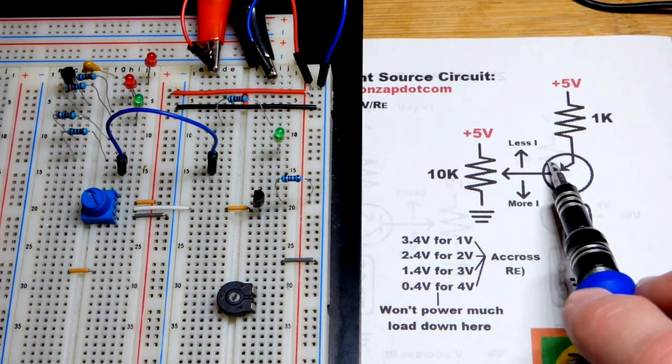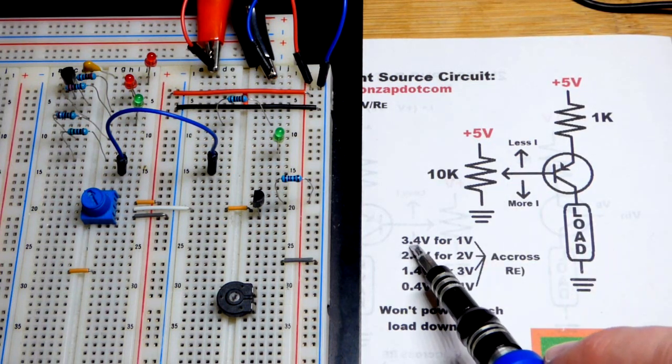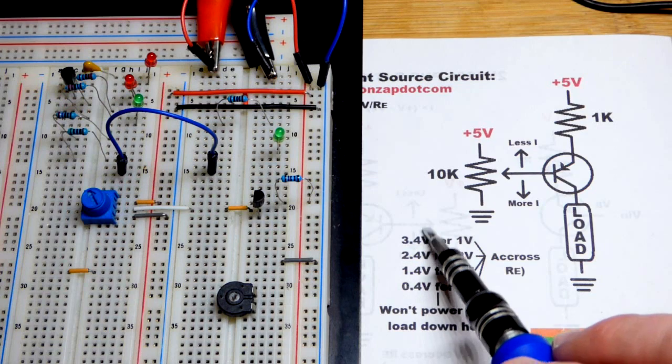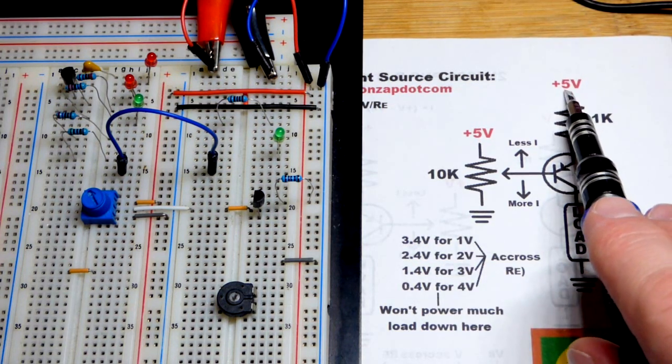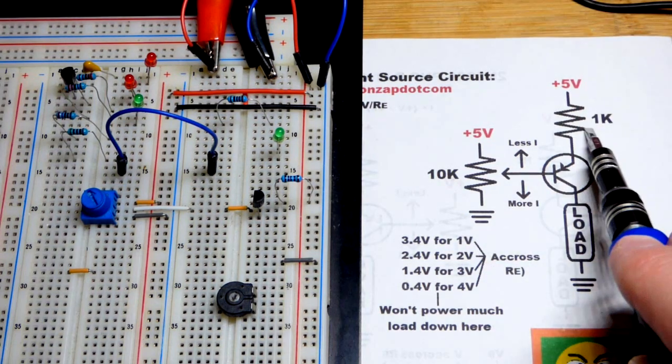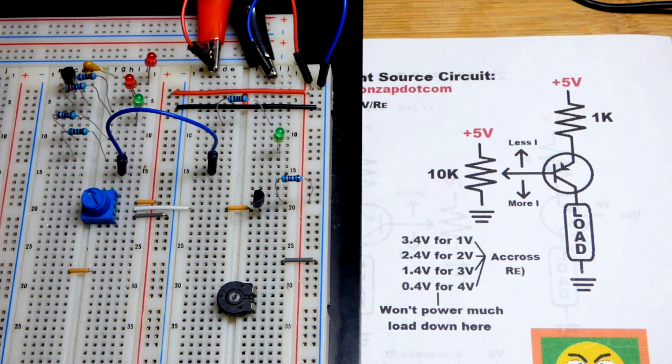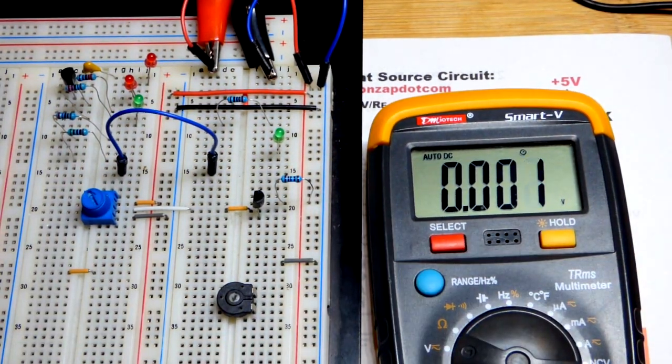But then there's the base to emitter that adds another about 0.6 volts that we have to add to this number. So we want to subtract about 1.6 volts away from 5 volts to get about 1 volt across this resistor. And so I know that's kind of confusing. And hopefully it's not, but if it is, oh well, I can't do too much about that.